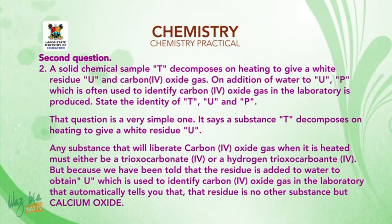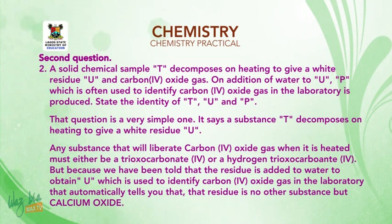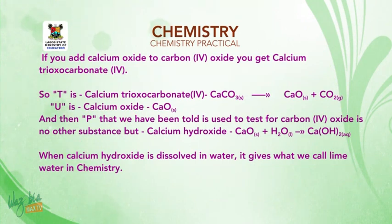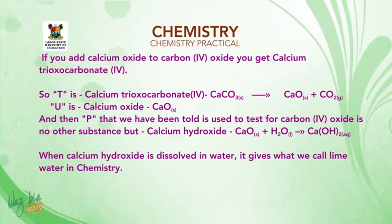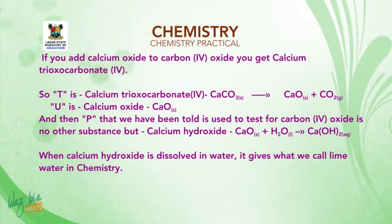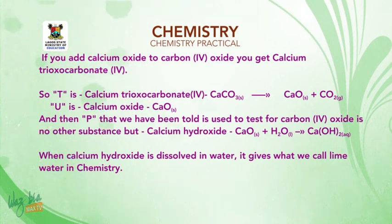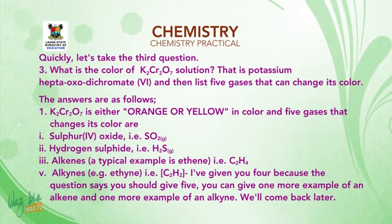That automatically tells you that the residue is no other substance but calcium oxide. If you add calcium oxide to carbon dioxide you get calcium trioxyl carbonate 4 (calcium carbonate). So T is calcium trioxyl carbonate 4 (calcium carbonate), U is calcium oxide, and P — used to test for carbon dioxide — is calcium hydroxide. When calcium hydroxide is dissolved in water it gives us what we call lime water in chemistry.